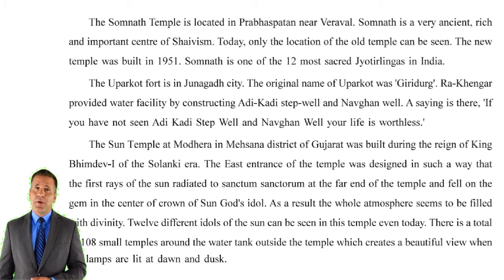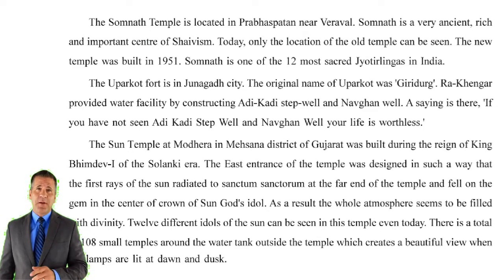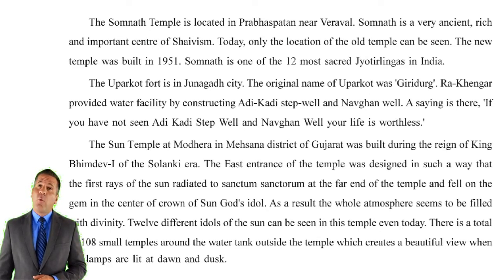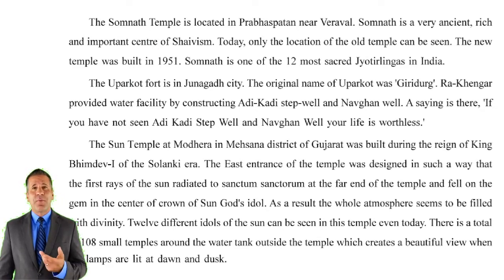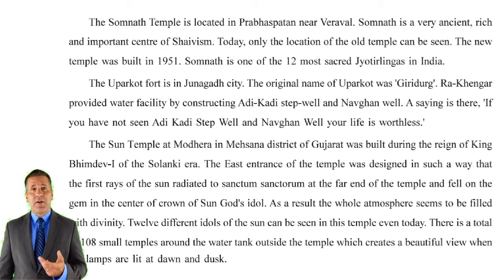A saying goes: if you have not seen Adikadi Step Well and Navghan Well, your life is worthless. The Sun Temple at Modhera in Mehsana district of Gujarat was built during the reign of King Bhimadev I of the Solanki era. The east entrance of the temple was designed so that the first rays of the sun radiated to the sanctum sanctorum at the far end and fell on the gem in the center of the crown of the sun god's idol, filling the whole atmosphere with divinity. Twelve different idols of the sun can be seen in this temple even today. There are a total of 108 small temples around the water tank outside the temple, which create a beautiful view when lamps are lit at dawn and dusk.